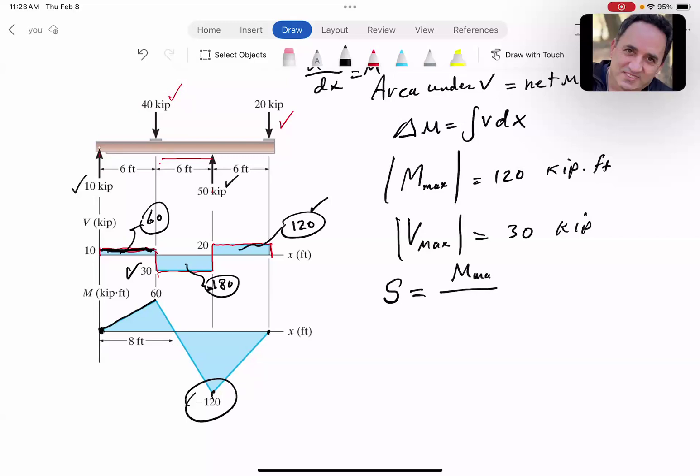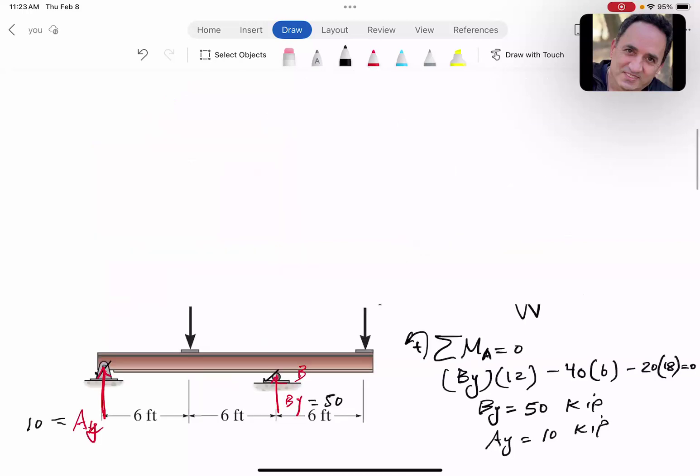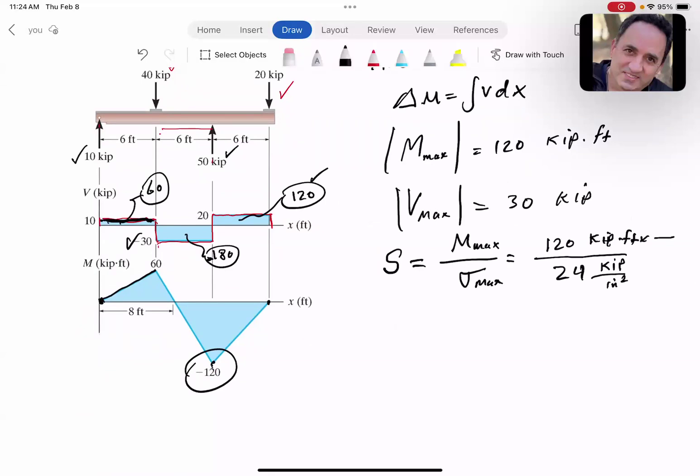We're ready to calculate section modulus. Section modulus is maximum moment divided by maximum stress. Maximum stress was 24 ksi (kip per inch squared). Maximum moment is 120 kip-ft, which I should convert to kip-inch by multiplying by 12 (one foot is 12 inches) to be consistent with units. If you do the calculation, you get 60 inch³. That's the typical unit for section modulus. So at minimum, we need 60 inch³ section modulus.